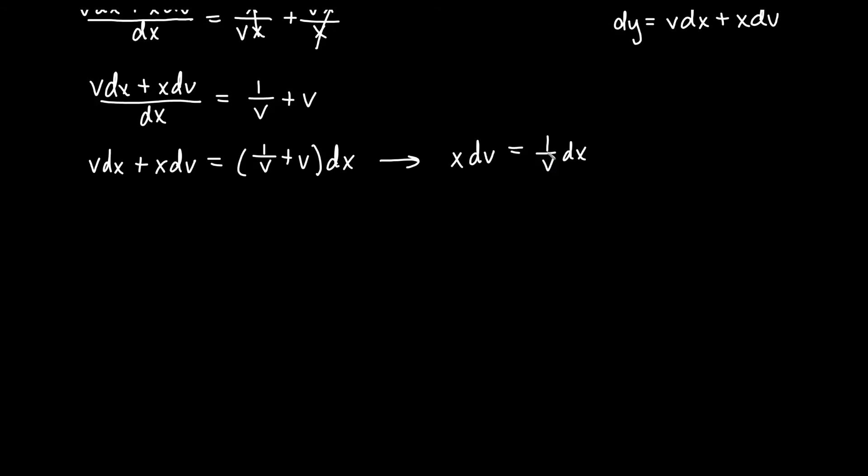So this would actually become xdv equals just 1/v dx once I subtract vdx from both sides. If I go ahead and multiply both sides by v and divide both sides by x, then we get vdv is equal to 1/x dx. And so we'll make a statement here that this is separated at this point.